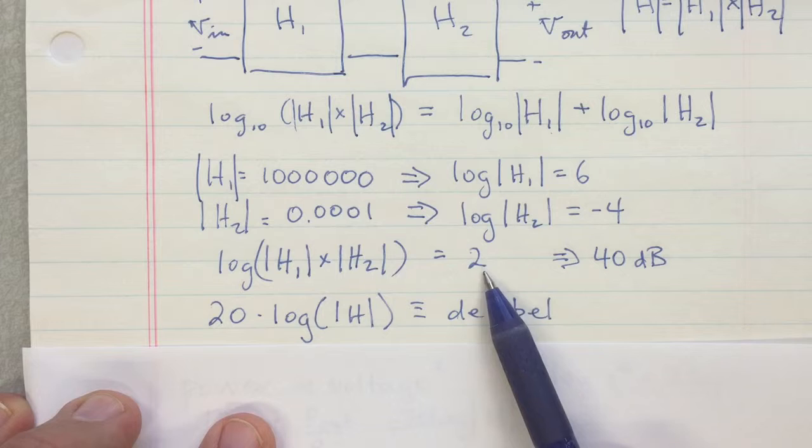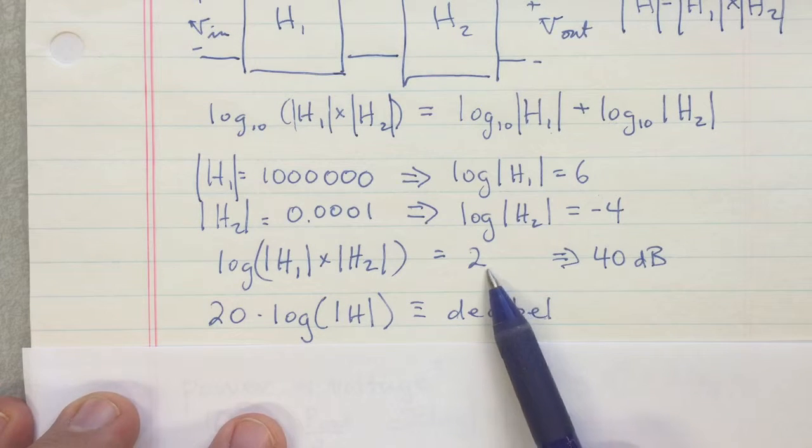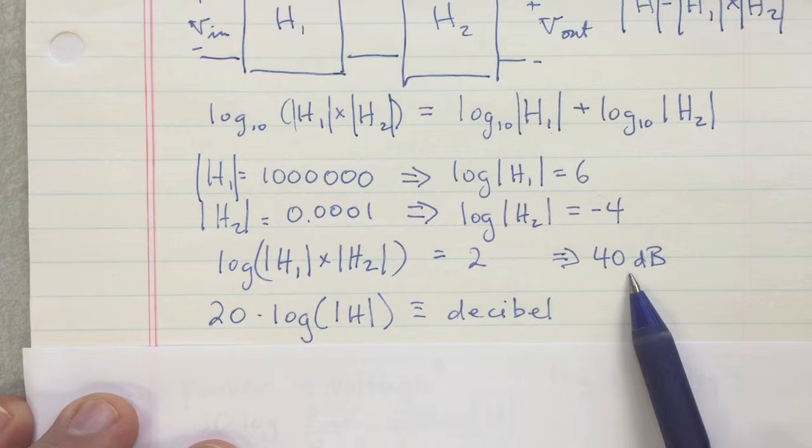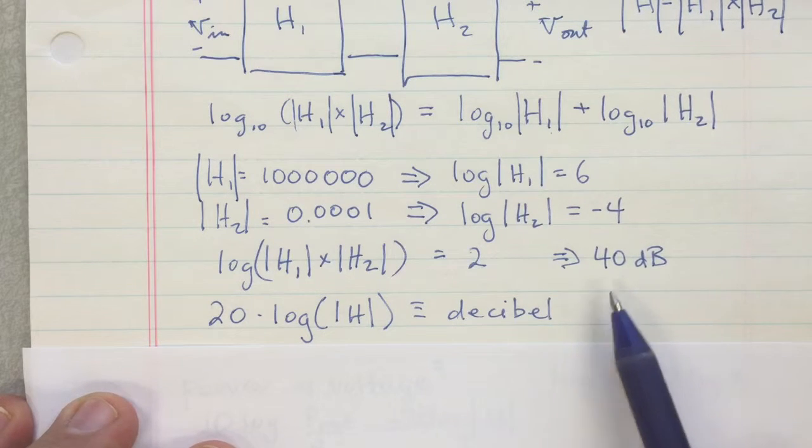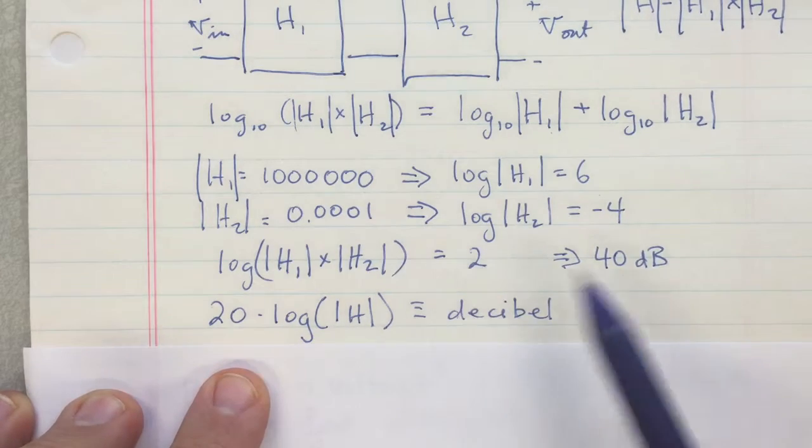That actually has a unit—it's called bells—but that unit is not used because it's such a large value. A bell is huge; two bells is a factor of a hundred. So people use decibels instead. They multiply that number by twenty, so one decibel is a much smaller ratio than a bell.